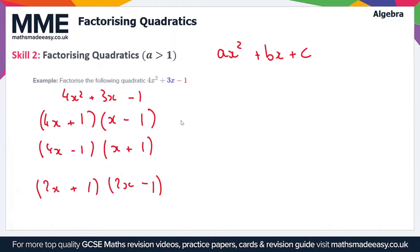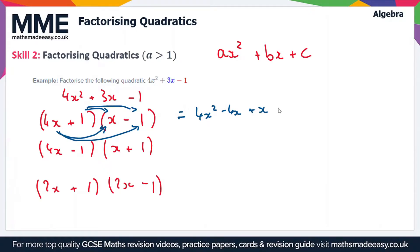We'll use the FOIL method to expand out all these brackets and see which one gives us our quadratic. For the first one: 4x times x gives us 4x squared, 4x times minus 1 gives us minus 4x, 1 times x gives us plus x, and 1 times minus 1 gives us minus 1. When we simplify, we get 4x squared minus 3x minus 1, which is not equal to the quadratic we started with — so that's a wrong answer.